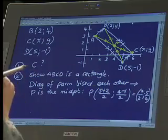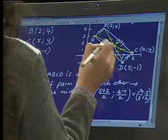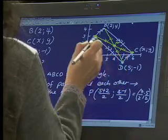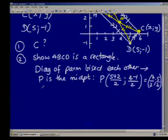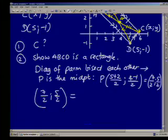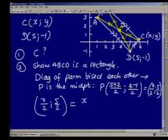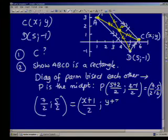But now, P is also the midpoint of AC. So the formula there would be P, 7 over 2, 3 over 2, is also equal to the other two segments, which would be X plus 1. The sum of your X's divided by 2. And the Y would be Y plus 3 over 2.